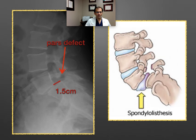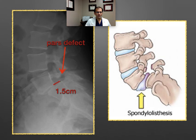And here is the pars defect. You can actually see — compare — this is where the pars would be at L4. You can see that little gap right here, which is the pars defect at L5, which permits this slip of one and a half centimeters.